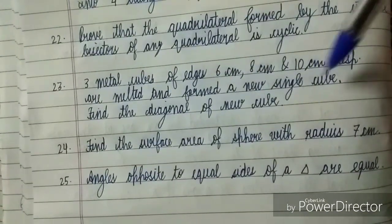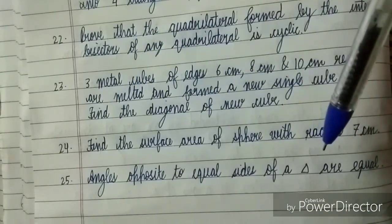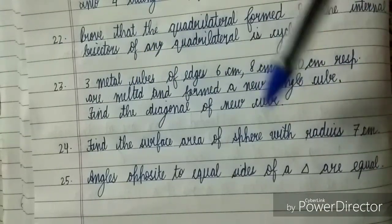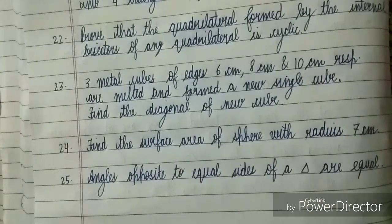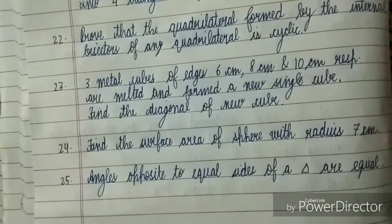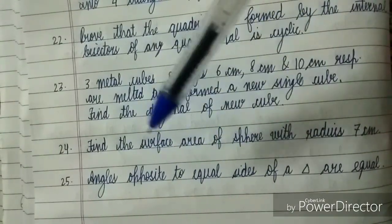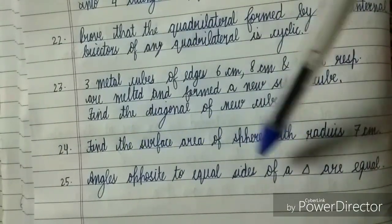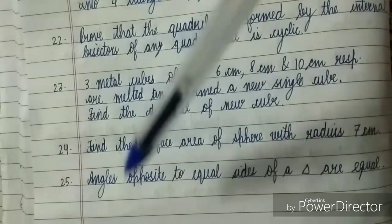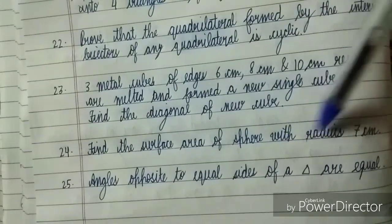Then very easy question - this might come in one or two marks only: surface area of a sphere with radius 7 cm. You just have to learn the formulas from Surface Area and Volume and you will be able to solve all the questions. Next is another important theorem from chapter Triangles: angles opposite to equal sides of a triangle are equal. This might also come like this: sides opposite to equal angles of a triangle are equal. Prove it, state and prove.